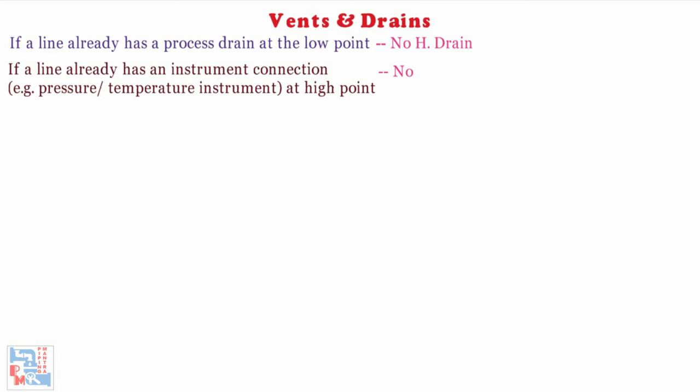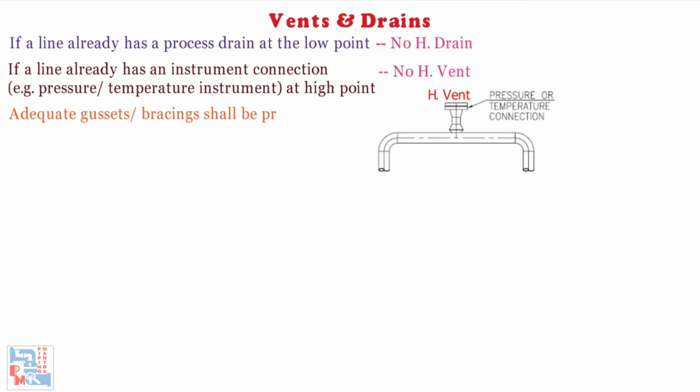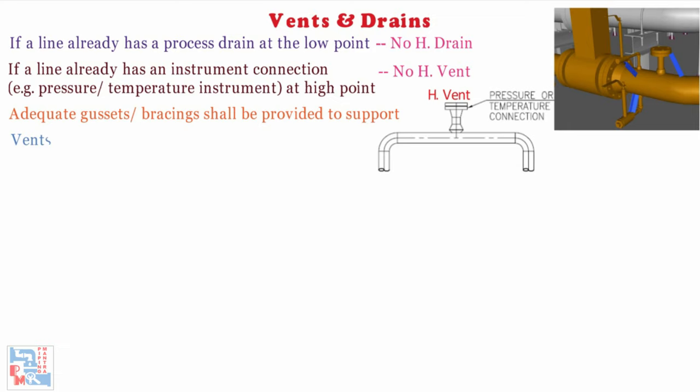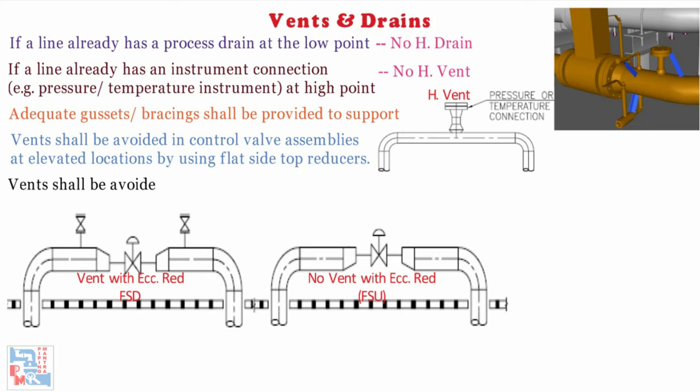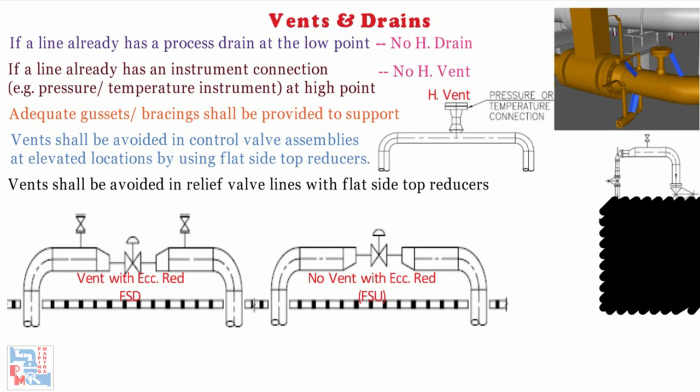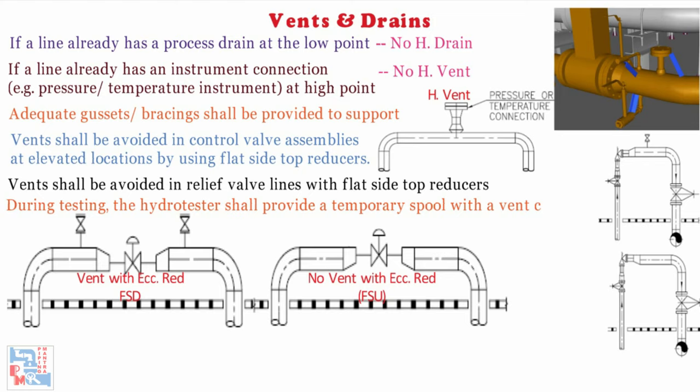Adequate gussets or bracings shall be provided to support the vents and drains in case of lines subjected to vibrations. Vents shall be avoided in control valve assemblies at elevated locations by using flat-side-up reducers. The same is applicable for outlet of relief valve lines; flat-side-up reducers shall not provide a high point vent, as during testing the hydrotester shall provide a temporary spool with the vent connection in lieu of the control valve.